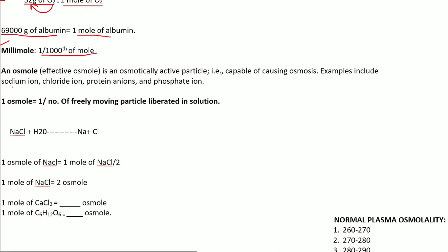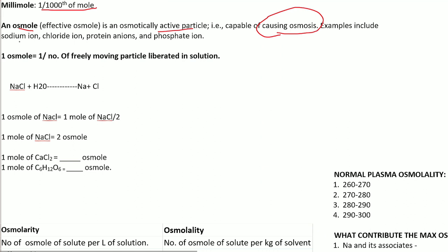The next topic is osmol. What is an osmol? An osmol — or effective osmol — refers to osmotically active particles that are capable of causing osmosis. Any particle that can cause osmosis constitutes an osmol. Common examples include sodium, chloride, protein, and phosphate ion.